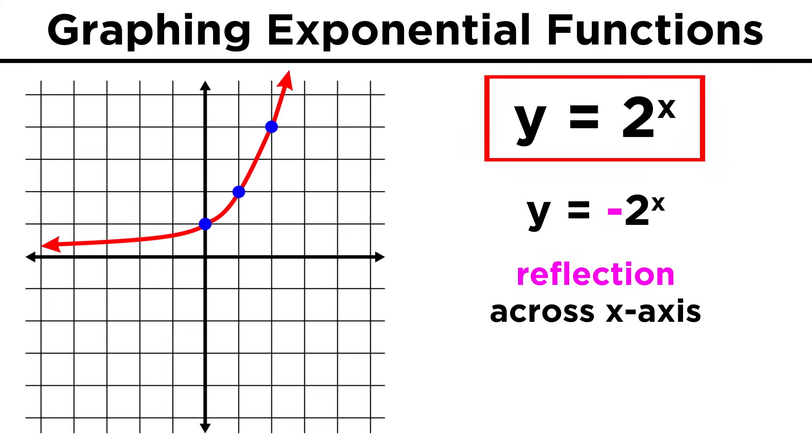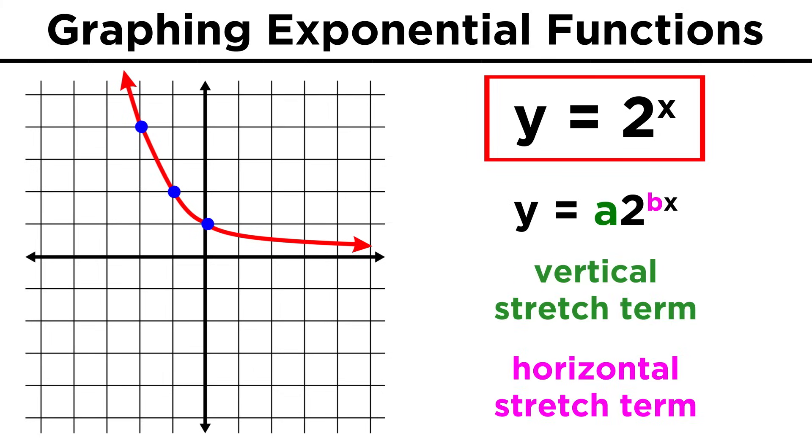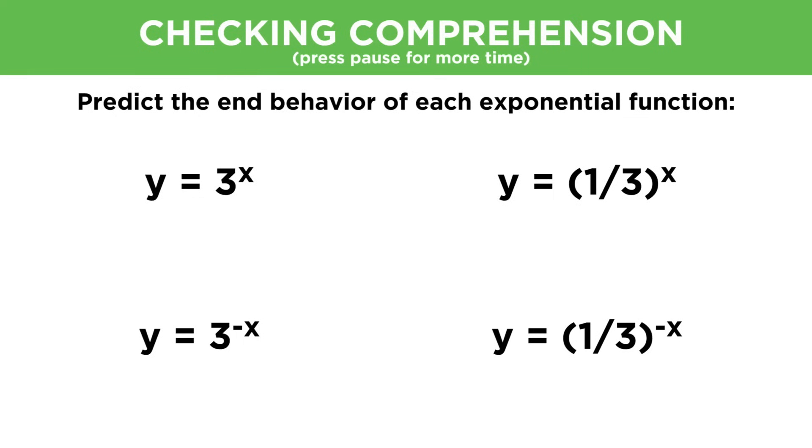If we put a negative sign here, we get a reflection across the x-axis, since all the positive values become negative values. If instead we put the negative sign here, before the variable, we get a reflection across the y-axis, just as we saw earlier with two to the negative x. And lastly, a coefficient here or here will produce vertical stretching and horizontal stretching respectively. Let's check comprehension.